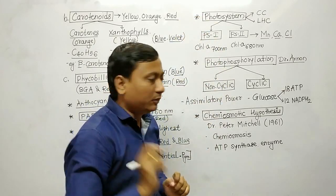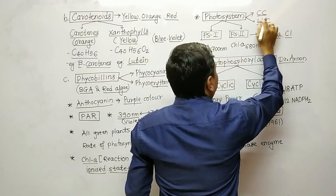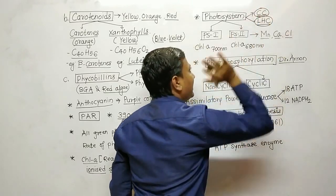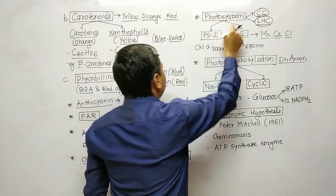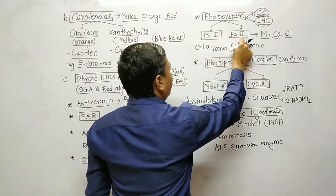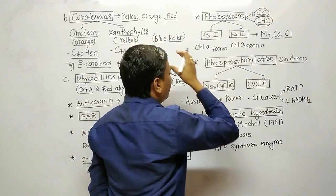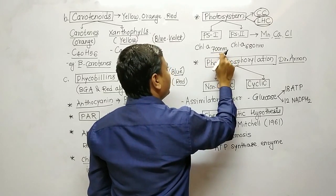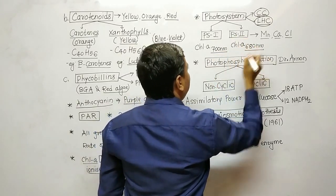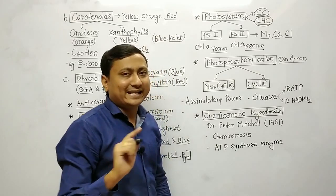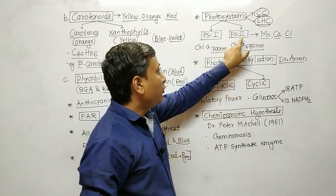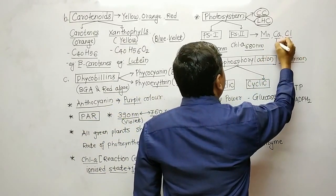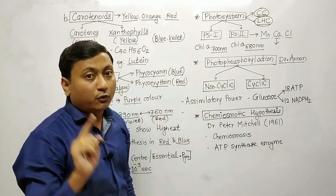The next topic is the photosystem. A photosystem is composed of two components: one is the core complex and the other is the light harvesting complex. There are two types: Photosystem 1 and Photosystem 2. In Photosystem 1, chlorophyll A maximum absorption is at 700 nm. In Photosystem 2, chlorophyll A maximum absorption is at 680 nm. Additionally, ions — manganese, calcium, and chloride — present in Photosystem 2 are responsible for photolysis of water.